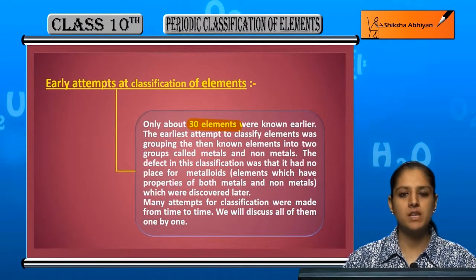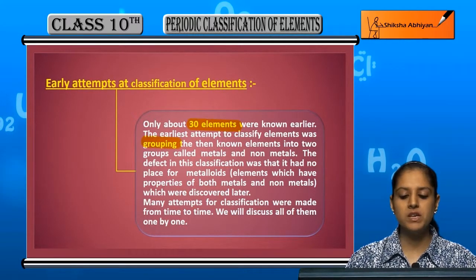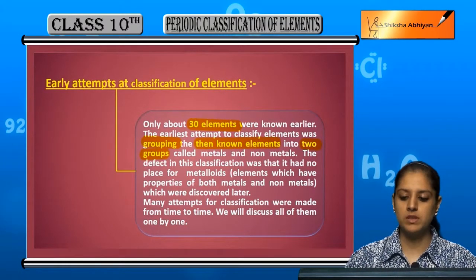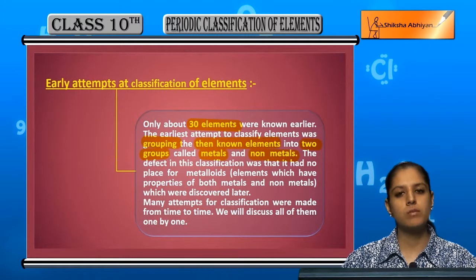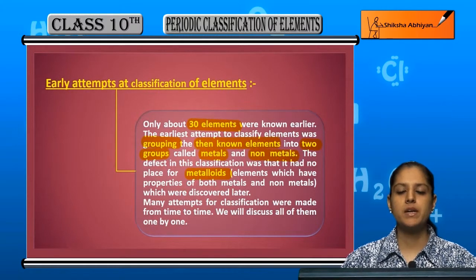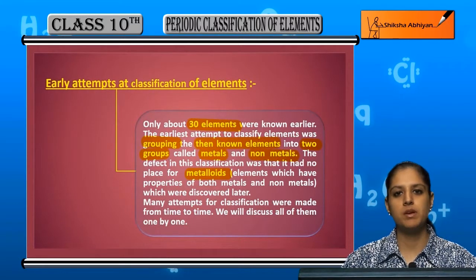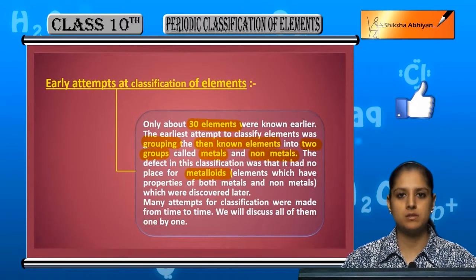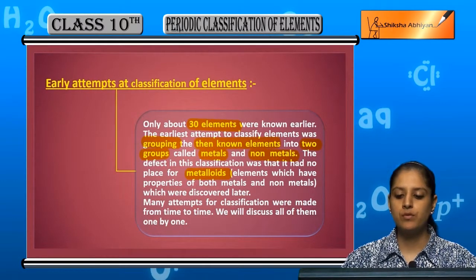When there were only about 30 elements known, elements were divided into 2 groups: metals and non-metals. Either the elements used to be metals or non-metals. But after that, it was realized that metalloids — elements that behave like both metals and non-metals — also exist. The question then was: where do we place metalloids? This became the limitation of that classification.